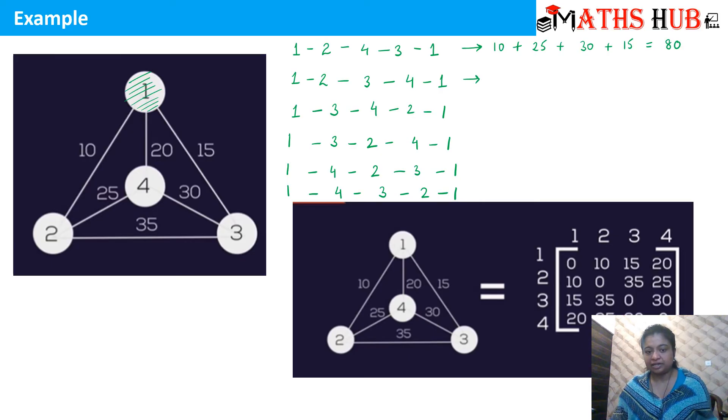Now let us see what is the cost of travelling from 1 to 2, 2 to 3 and then from 3 to 4 and 4 to 1. So 1 to 2 becomes 10. 2 to 3 is 35. 3 to 4 is 30. 4 to 1 is 20. So 30, 50, 60, 95.